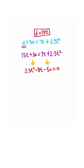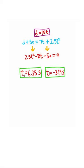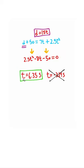From here, use the quadratic formula to get two answers for t. However, a negative time doesn't make sense, so we stick with 6.35 seconds. That's how much time it will take for car 2 to catch up to car 1.